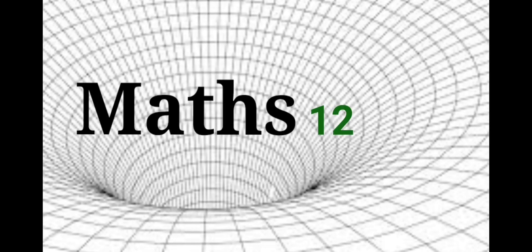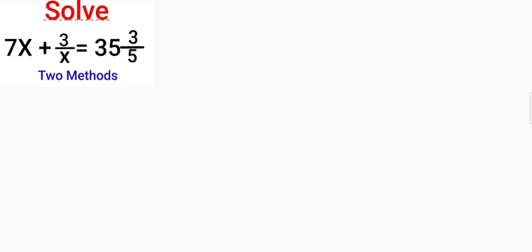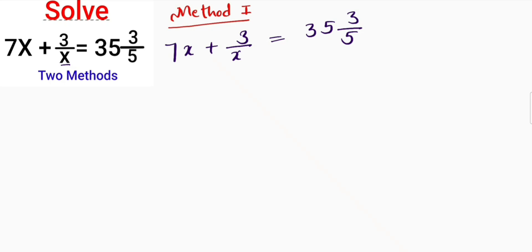Welcome to Maths 123. Here we will discuss two methods to find the values of x for the given equation: 7x plus 3/x equals 35 and 3/5. First method: I will take the LCM.